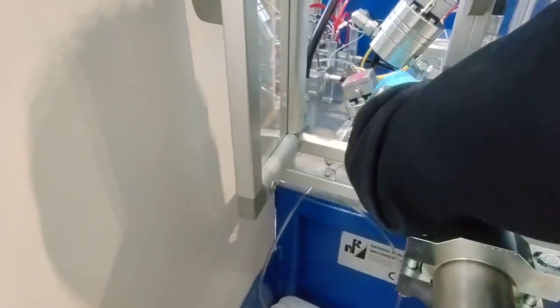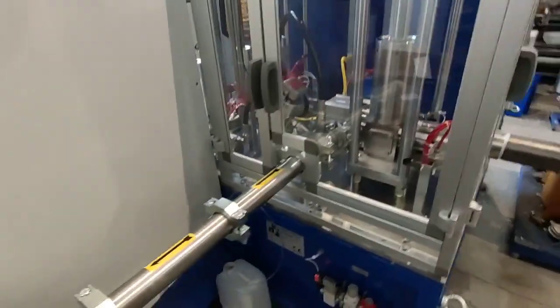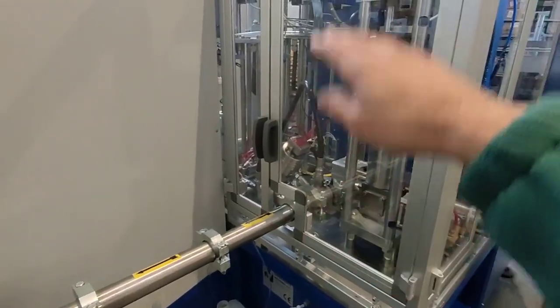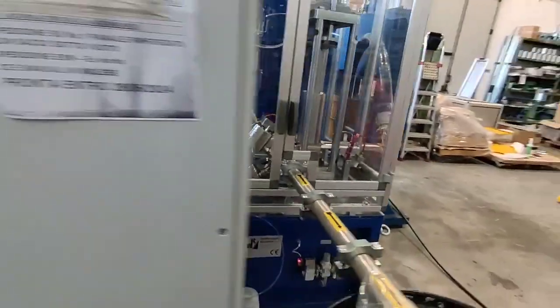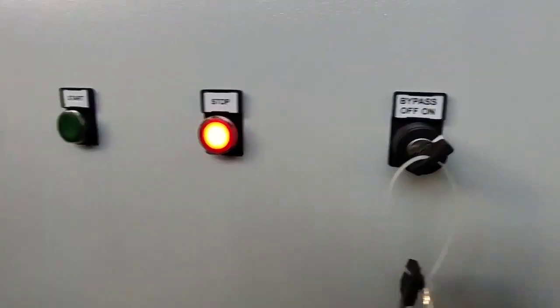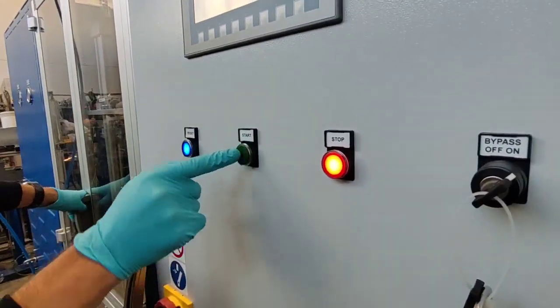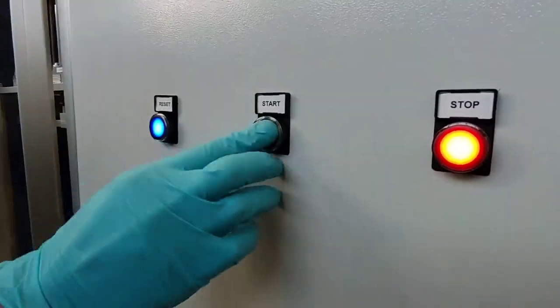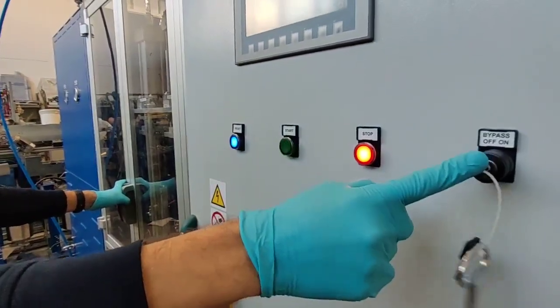Of course when the doors are open, the machine cannot move up and down. There is a key here to force the opening, permits you to open the door with the machine armed, but the machine cannot start. As you can see the green light here is off. This means that you cannot start the machine until you switch back on the key.